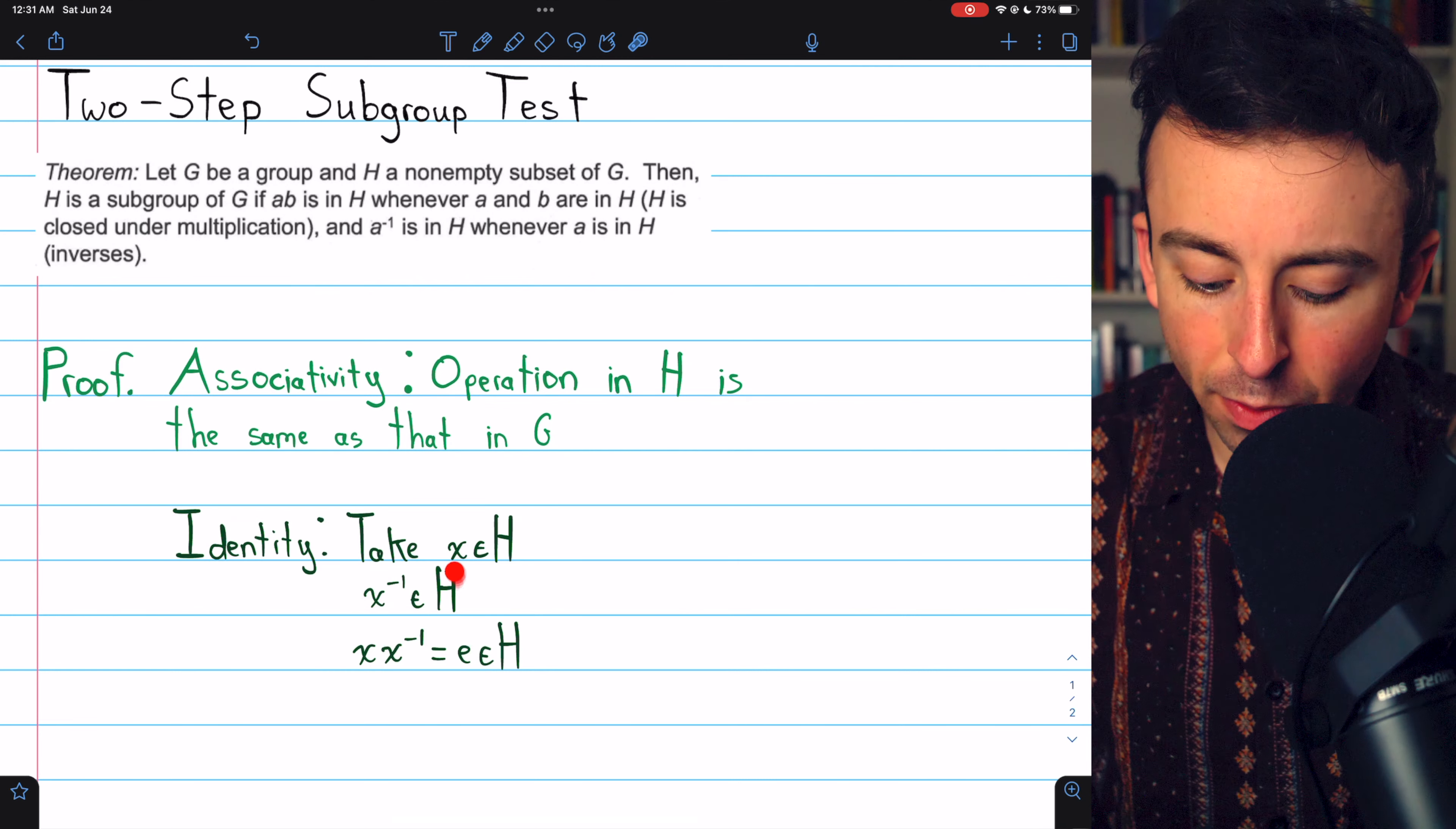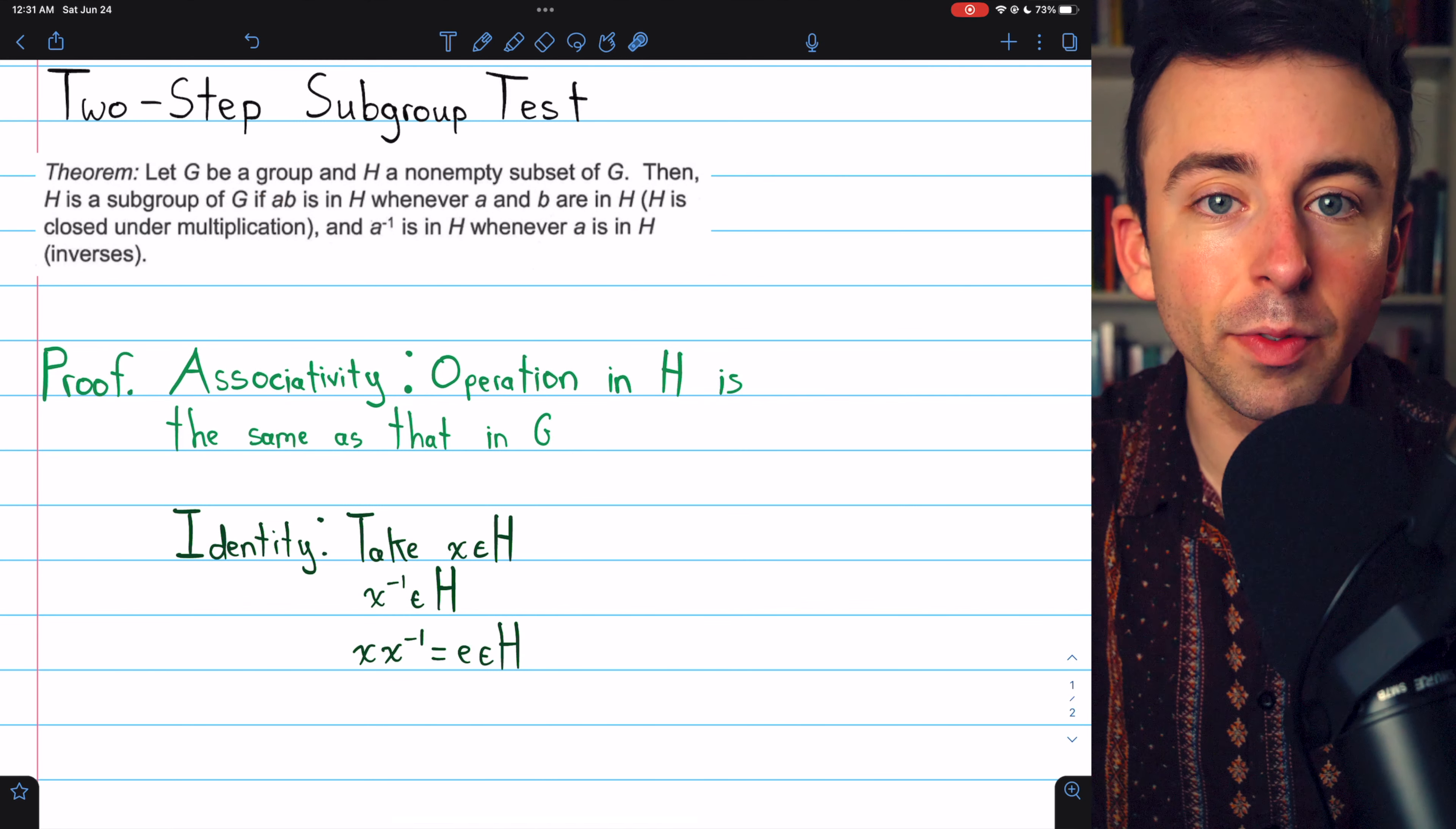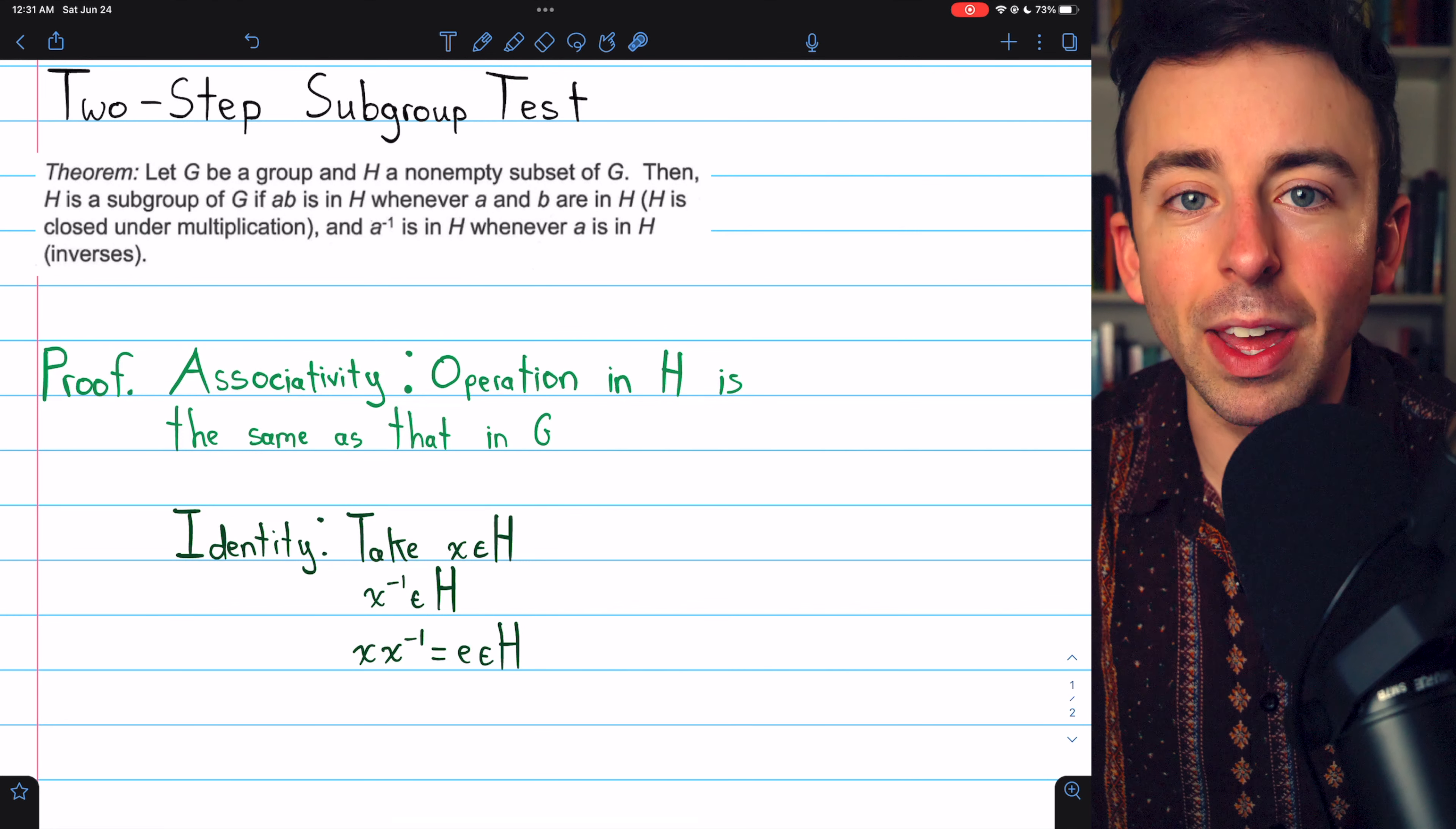That means that x inverse is in H, but we're also assuming that H is closed with respect to products. If we have two elements of H, their product is also in H. So since x and x inverse are in H, x times x inverse, which is the identity, must be an element of H.